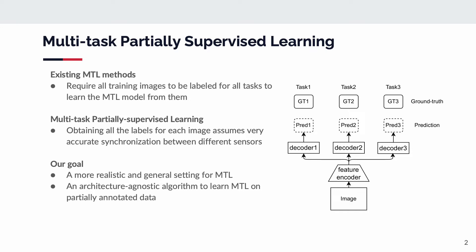For example, this image does not have a label for task 2, and this image does not have a label for task 3. To this end, we propose a more realistic and general setting for multi-task learning, called multi-task partially supervised learning, or MTPSL, and we present an architecture-agnostic algorithm to learn a multi-task learning model on partially annotated data.